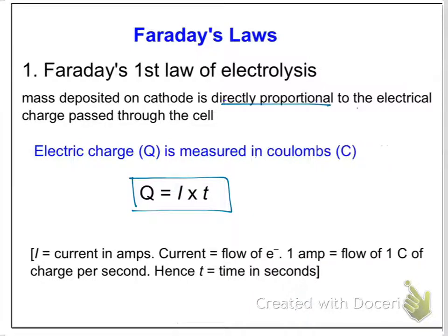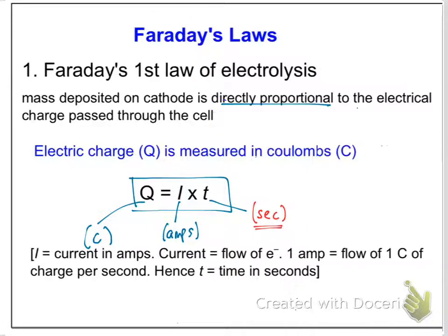Q equals IT, and by the way it is in your data booklet. Q is the electrical charge passed through the cell, measured in coulombs. It equals the current in amps times the time in seconds. It is important to remember that it must be in seconds — so if the time is given in minutes you will have to convert. For non-physicists: the current has the symbol I, measured in amps. Current is the flow of electrons. One amp is the flow of one coulomb of electrical charge per second, hence the time is always in seconds.